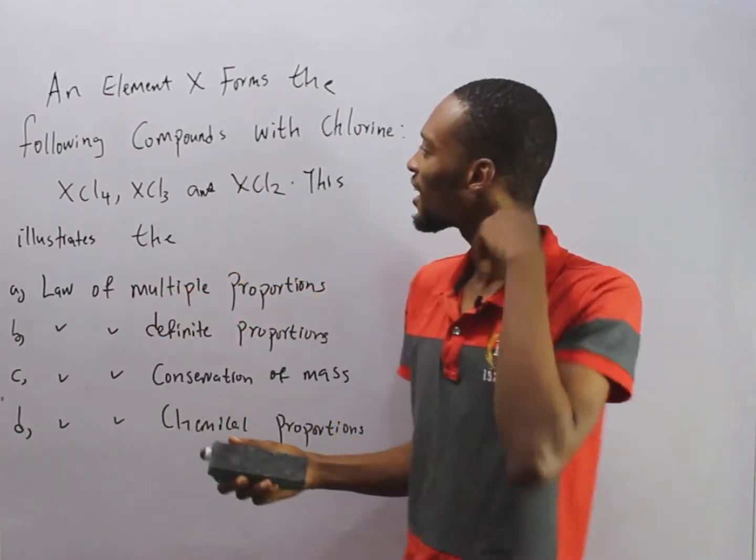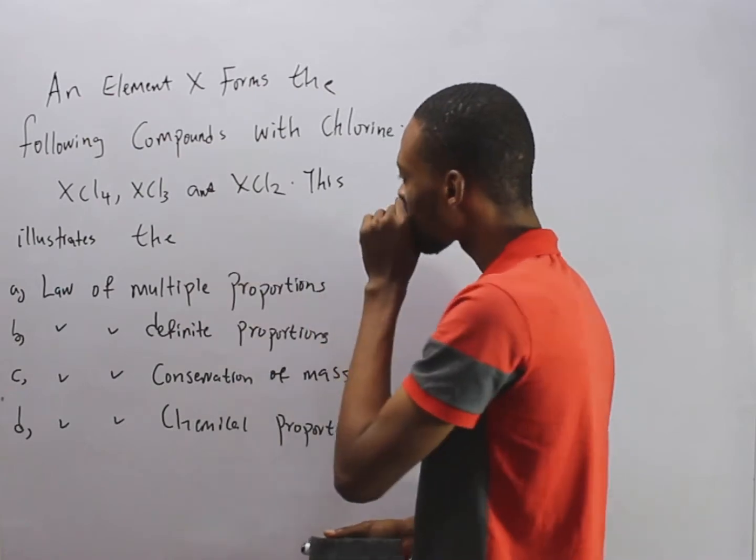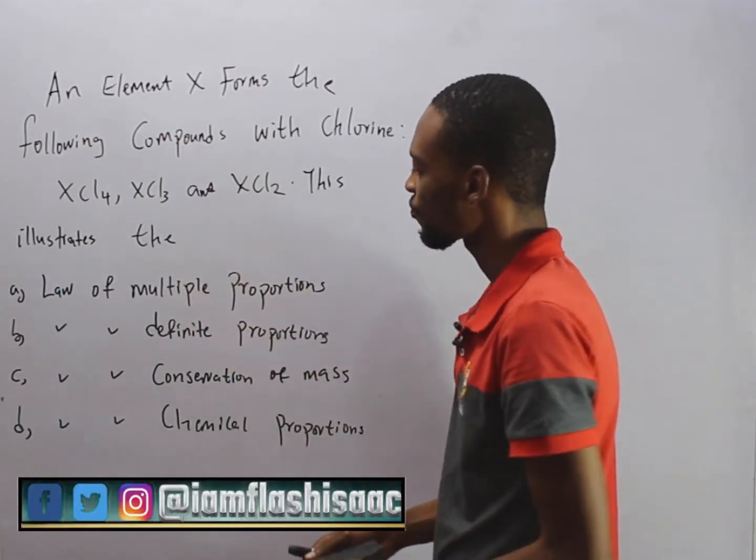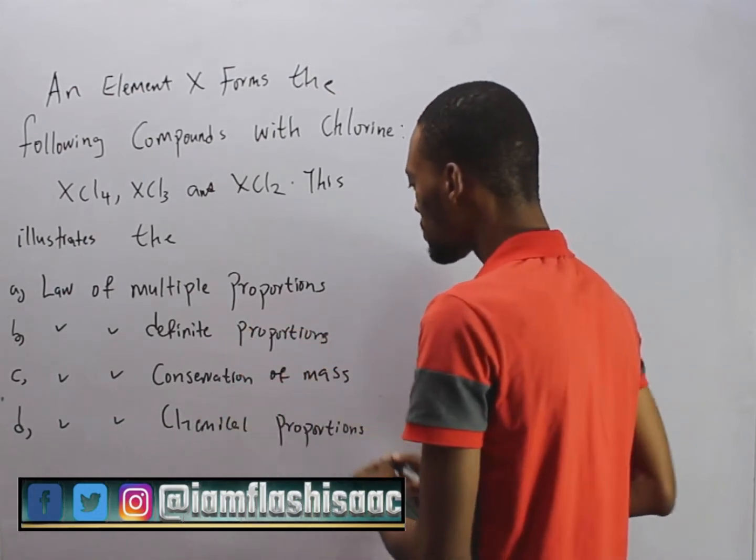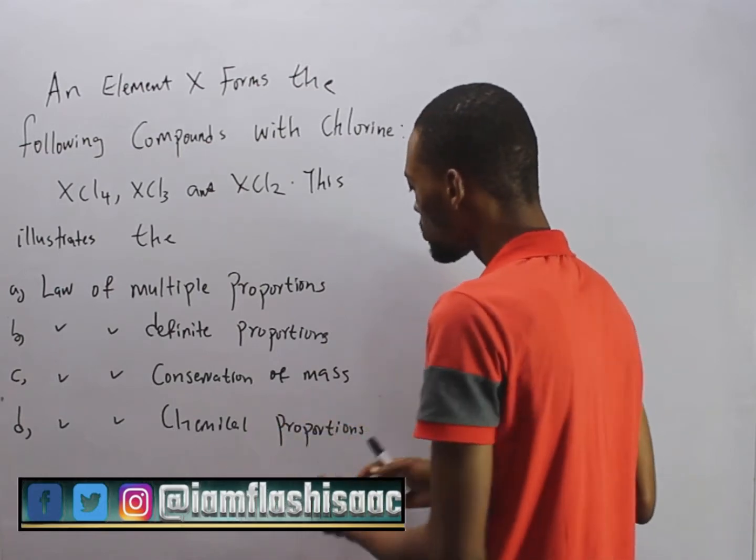It says, an element X forms the following compounds with chlorine: XCl3, XCl5, and XCl2. This illustrates the dash - law of multiple proportions, law of definite proportions, law of conservation of mass, and law of chemical proportions.